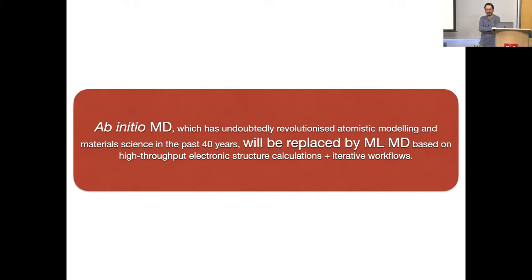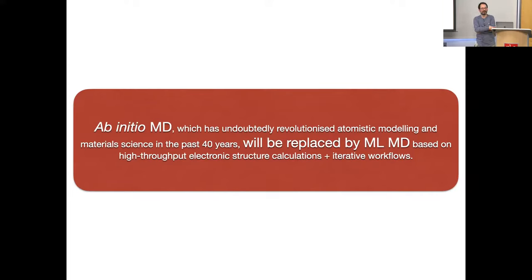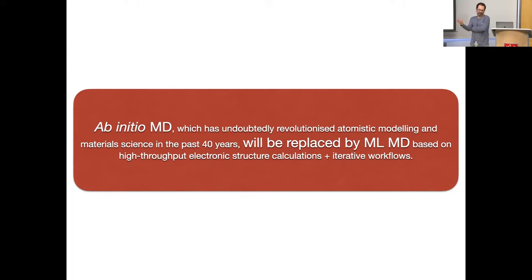Thank you for the very nice talk. I'm curious about getting ground truths for large sets of data — some systems might be correlated or there may be method uncertainty in getting a ground truth. How do you make your choice for simulation methodology? There's a huge amount of experience in materials modeling on what level of quantum mechanics is good enough for what. But there might be surprises — there will be properties where you thought a level was good enough but it's not.